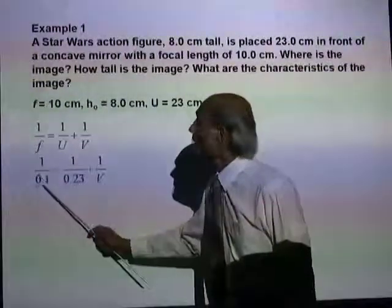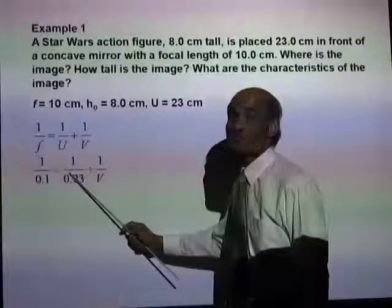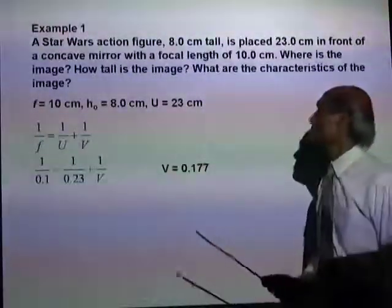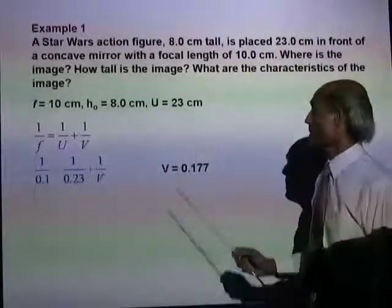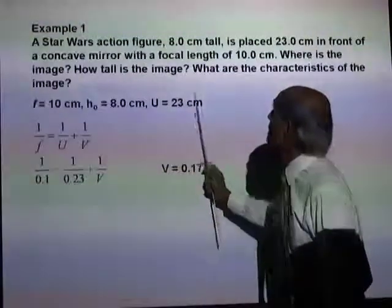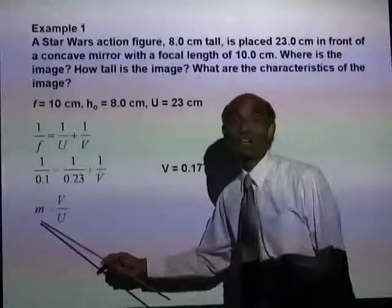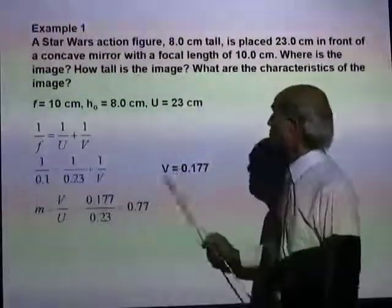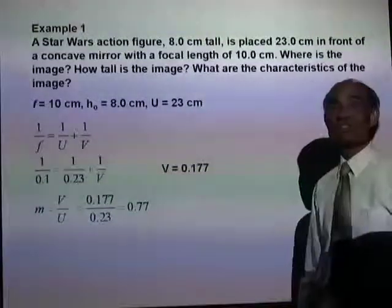Using the values, the focal length is 0.1 meter and the object distance is 0.23 meter. Therefore V equals 0.177 meter. Once you know V and U, you can calculate magnification. Magnification is V over U, which gives a magnification of 0.77.